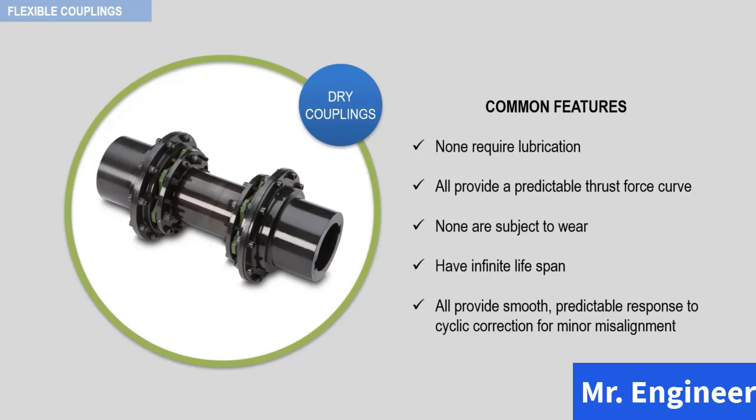All provide smooth, predictable response to cyclic correction for minor misalignment. It should be noted that none of these comments can be applied across the board to gear type flexible couplings. For this reason, more and more special purpose machinery trains are being supplied with flexible metallic element couplings in their design, and many end users do not allow the use of gear type couplings for critical applications.